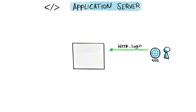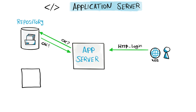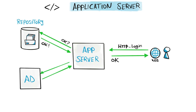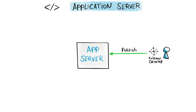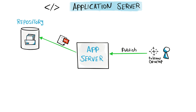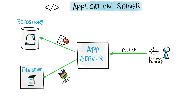The Application Server is responsible for different processes. A user login request is forwarded to the Application Server, which then checks with the repository or Active Directory — depending on your configuration — to find out if the user is allowed to access the server. Another process the Application Server handles is the publish process, where it receives the publish request and splits the workbook into two files: the XML file stored in the repository and the Hyper file stored in the file store.